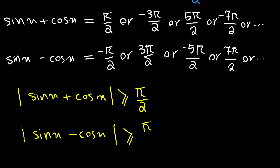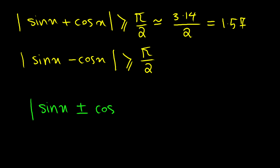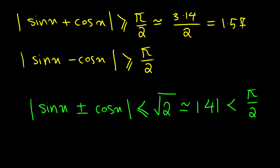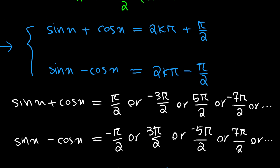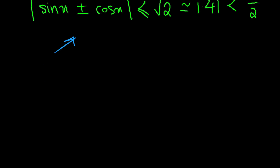Now pi over 2 is approximately 3.14 divided by 2, which equals 1.57. But we know that the absolute value of sine of x plus or minus cosine of x is always less than or equal to the square root of 2, which is approximately 1.41. Since the square root of 2 is less than pi over 2, these equations cannot be satisfied. Therefore, there is no solution — f of x and g of x have no intersection points.